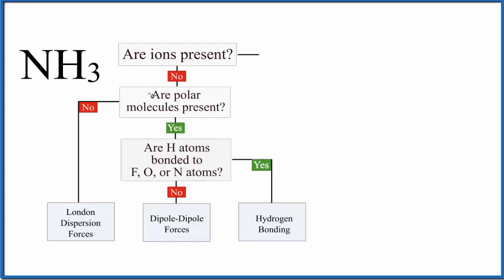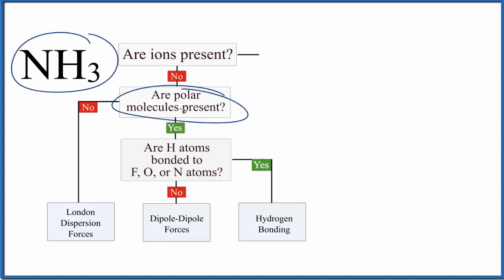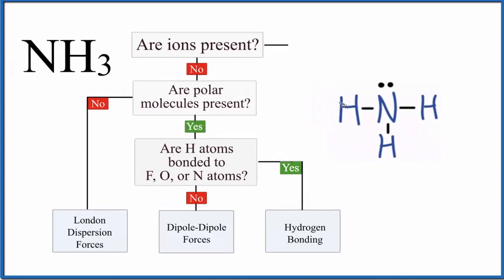So we don't have ions, but is NH3 a polar molecule? That's our next question. We really need to look at the Lewis structure to figure that out. So here's our Lewis structure. We have the three hydrogen atoms, and then on top there is a lone pair of electrons. When we look at the shape of the molecule, the molecular geometry for NH3, the lone pair here occupies space. That's going to push down the hydrogen atoms — we'll have what's called trigonal pyramidal molecular geometry.